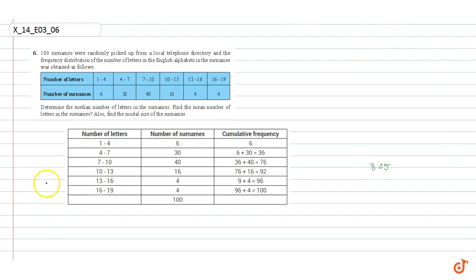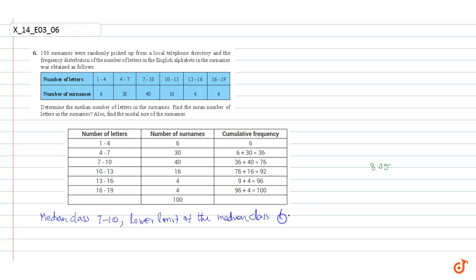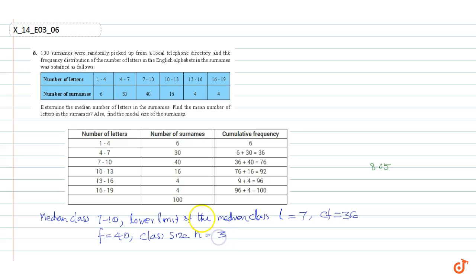Therefore, the median class is 7 to 10. The lower limit of the median class, L, is equal to 7. The cumulative frequency preceding the median class, CF, is equal to 36. The frequency of the median class, F, is equal to 40. The class size H is 3, which is equal for all classes.